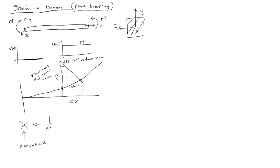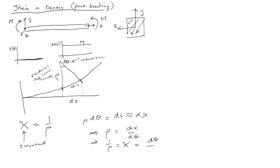For small deflections, we can ignore differences between sines and tangents. We have that ρ dθ equals ds, but ds is approximately equal to dx for small deflections. This implies that ρ equals dx/dθ, which then implies that 1/ρ, which equals kappa, equals dθ/dx. So our first geometric relationship is that curvature is just the rate of change of rotation θ with respect to x.